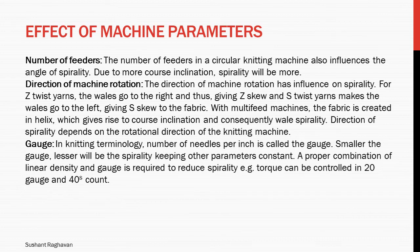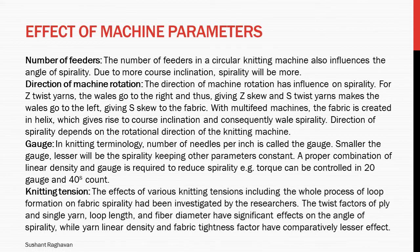In knitting terminology, the number of needles per inch is called the gauge. Smaller the gauge, lesser will be the spirality keeping other parameters constant. A proper combination of linear density and gauge is required to reduce spirality; torque can be controlled in 20 gauge and 40s count. Regarding knitting tension, the twist factor of ply and single yarn, loop length, and fibre diameter have significant effects on the angle of spirality, while yarn linear density and fabric tightness factor have comparatively lesser effect.